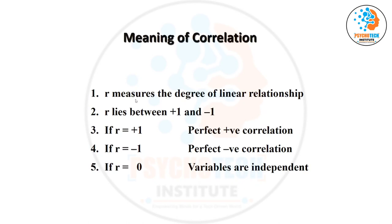Negative correlation means one variable is increasing and another variable is decreasing. If it is positive correlation, the value is more than zero. If it is negative correlation, the value is less than zero. Always remember: the range of correlation lies from plus 1 to minus 1.